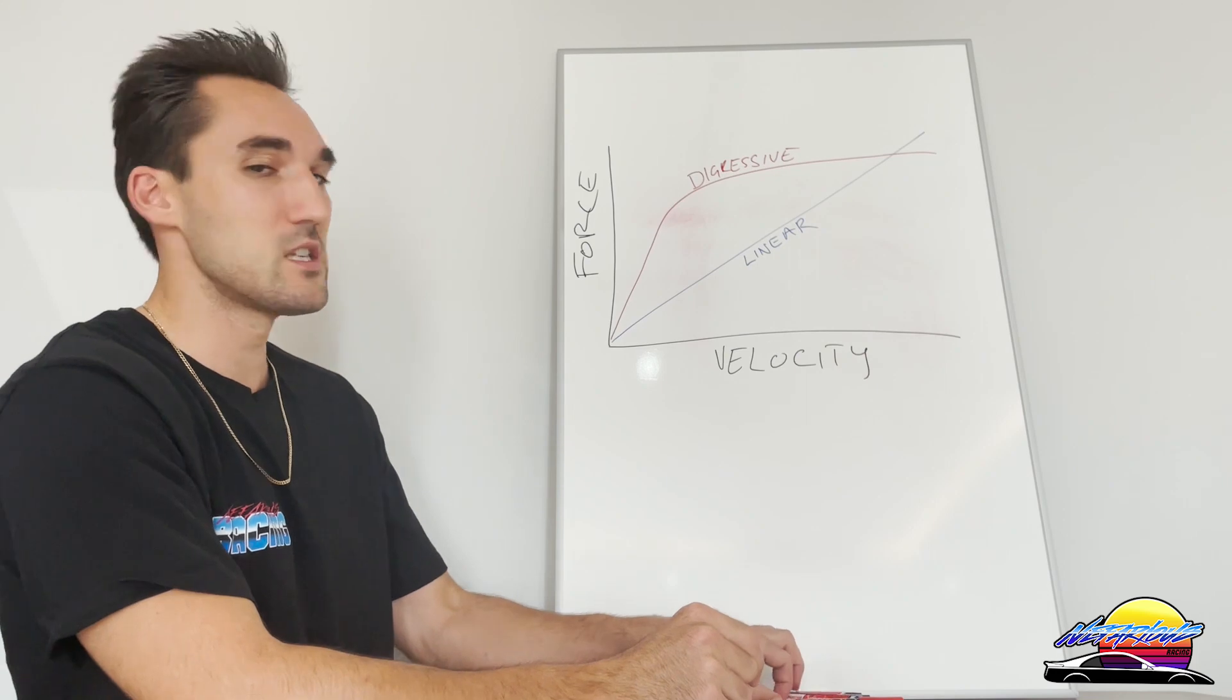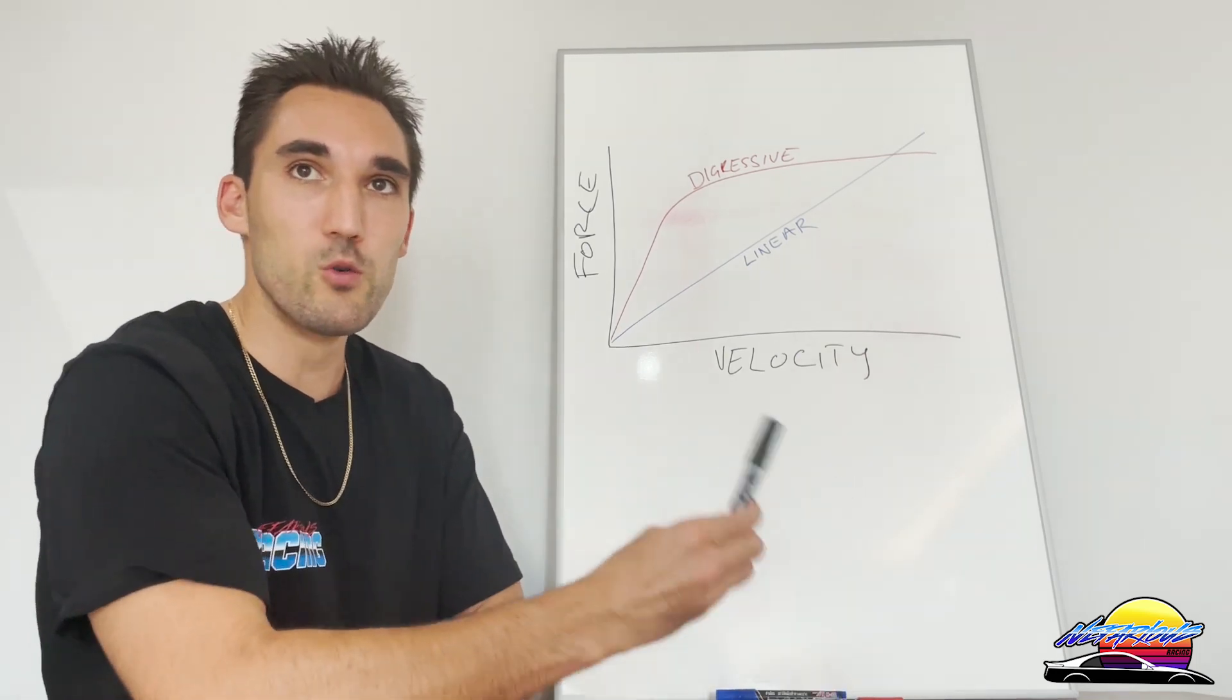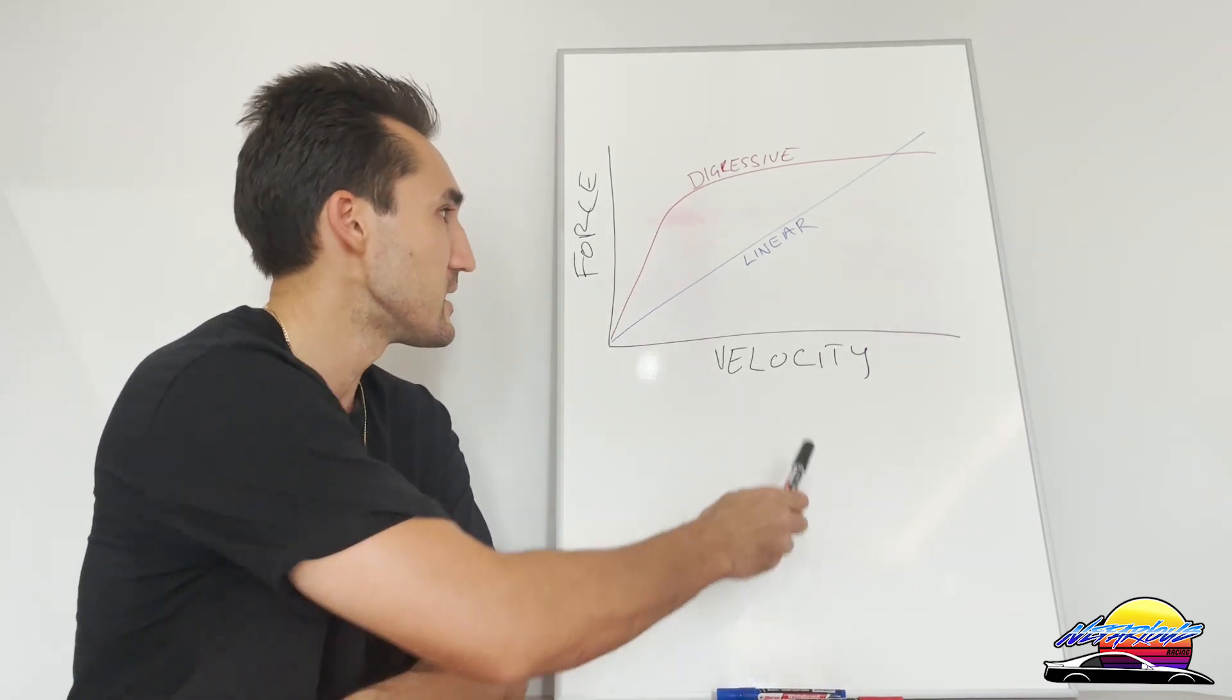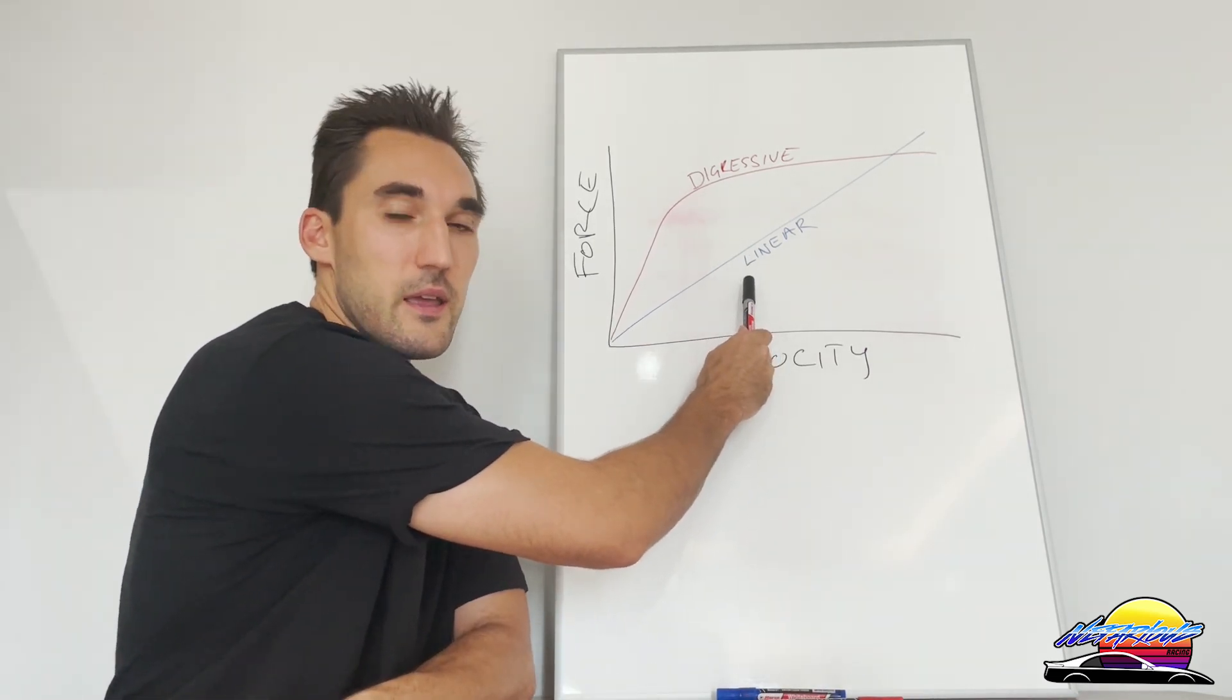The first thing to know is that pretty much most street kits, and actually most coilovers in general unless you're looking at race-specific kits, feature linear damping because it's better for the street. Digressive damping is typically used for more motorsport-oriented kits, and I'm going to explain the difference in exactly what that means.